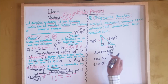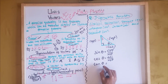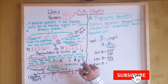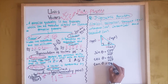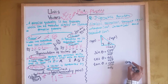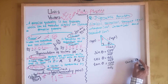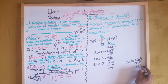Cosine theta is the adjacent side to the hypotenuse side. Tangent theta is the opposite side to the adjacent side. Sine theta over cosine theta gives us tangent.